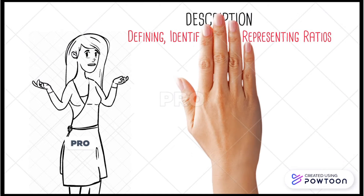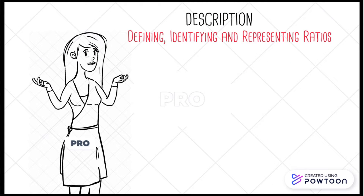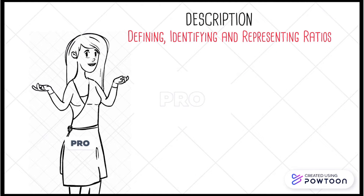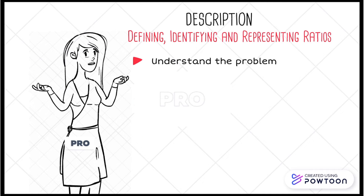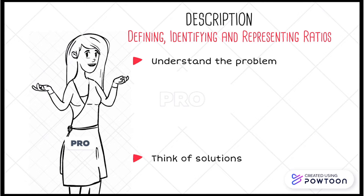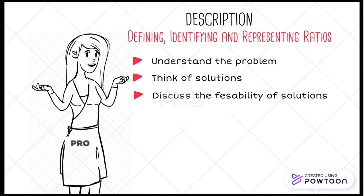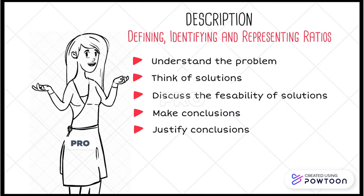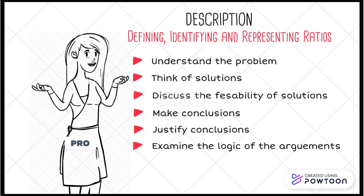Today's lesson was on defining, identifying and representing ratios. We learned how ratios can be used to solve real problems in life. We first had to understand the problem and think of possible ways of solving it. We discussed the possible solutions and their feasibility. We made conclusions based on the little information we had and justified these conclusions. There was a great amount of discussion about the logic of the arguments presented.